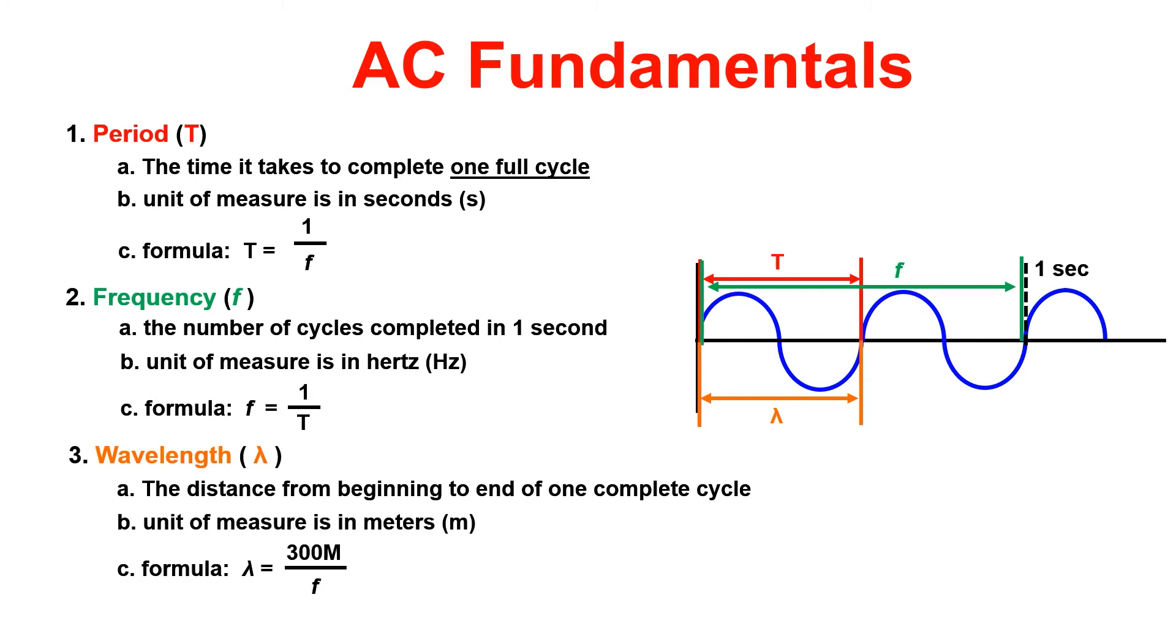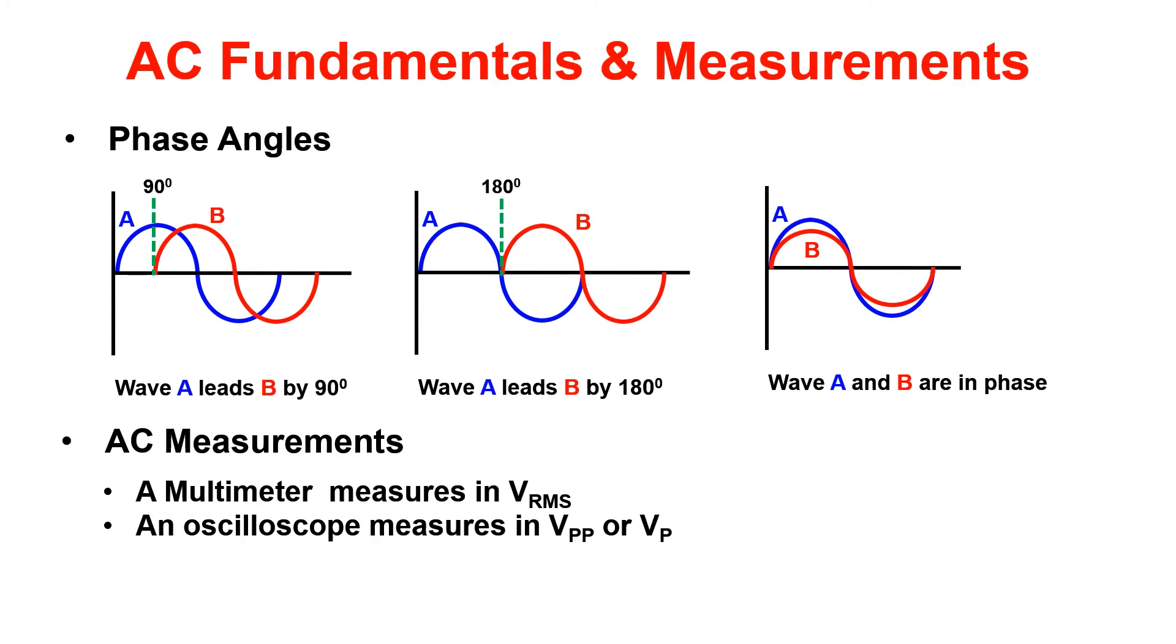This brings us to phase relationships. Phase angles can be identified by comparing the waveform start point. In the first example, wave A leads wave B by 90 degrees. It could also be said that wave B lags wave A by 90 degrees. In the second example, the phase difference is 180 degrees. In the third example, the waveforms are in phase.